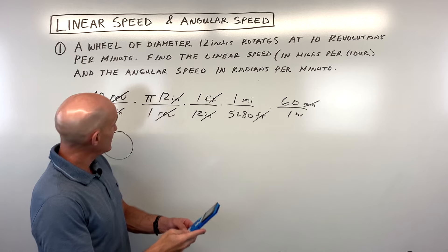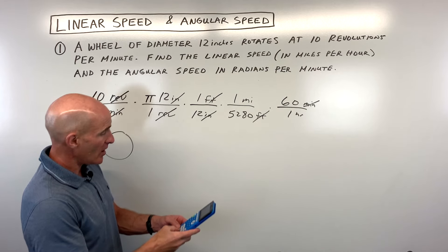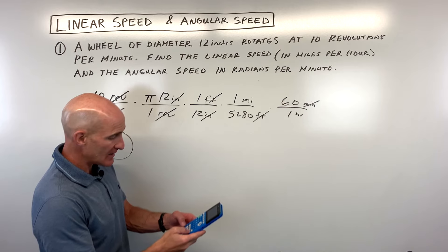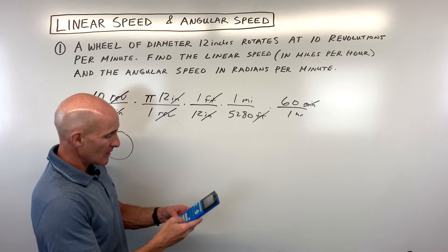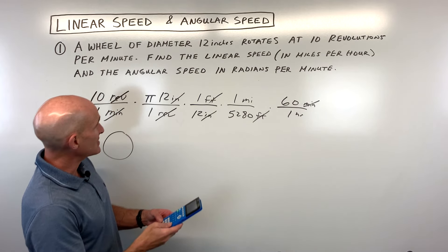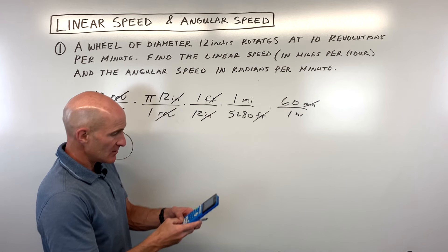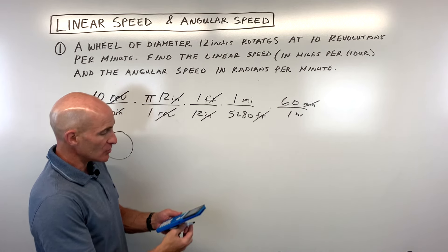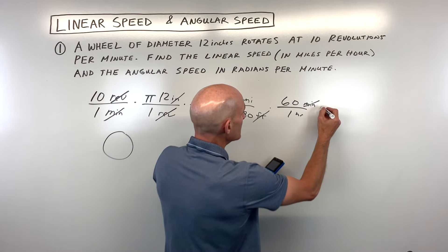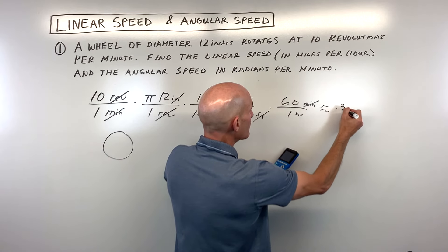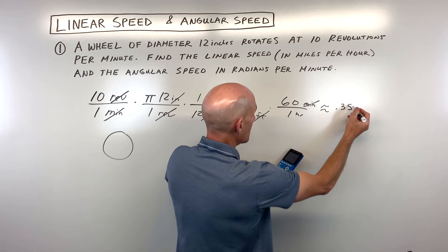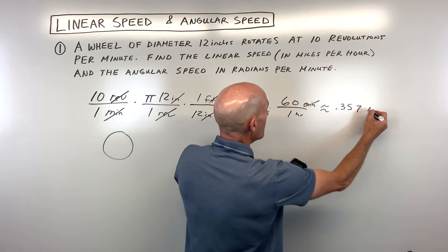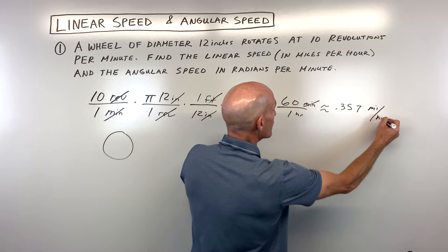That comes out to 10 times 12 times pi — you can use 3.14, or use the pi key — times 60, all divided by 12 times 5,280. That comes out to approximately 0.357 miles per hour.